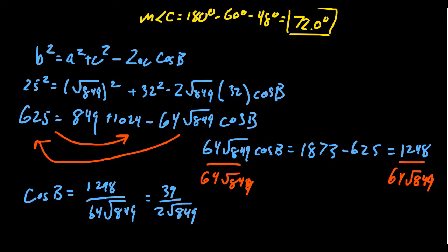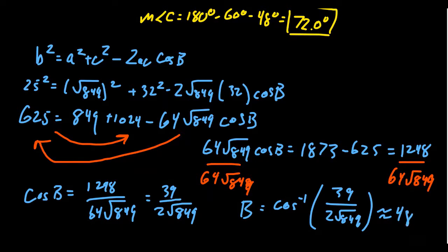So then that tells us the measure of angle B is going to equal cosine inverse of this value, 39 over 2 times the square root of 849, which like we saw before, this would give us 48.0 degrees. Then you can find out C was 72 by subtraction as well. So we'll get the same angle measurement for B either way.